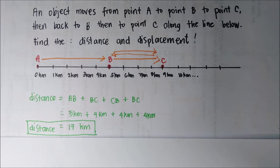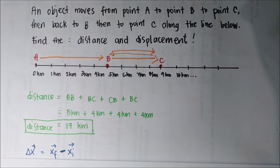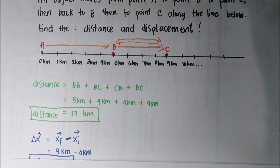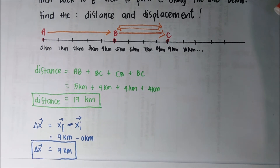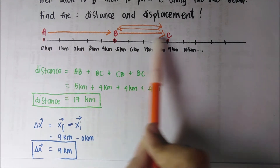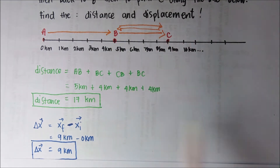Now for the displacement, it is the shortest possible length traveled by the object. We get the final position and the initial position. The final position is at point C, which is 9 kilometers, and the initial is 0 kilometers, so we simply subtract and our answer is 9 kilometers. The final direction would be to the right, so the displacement of the object is 9 kilometers to the right.